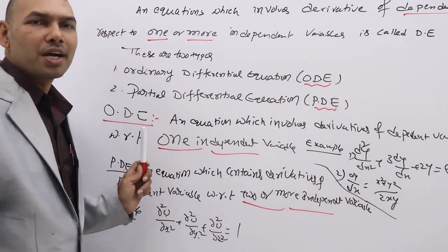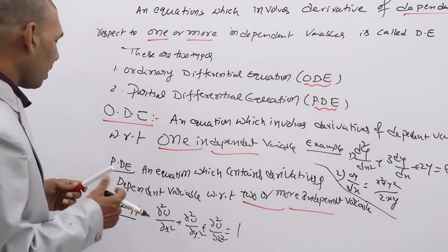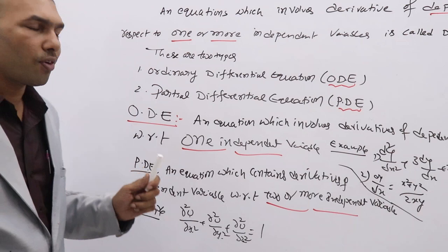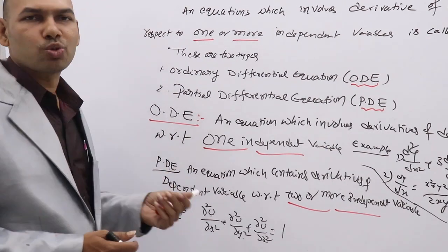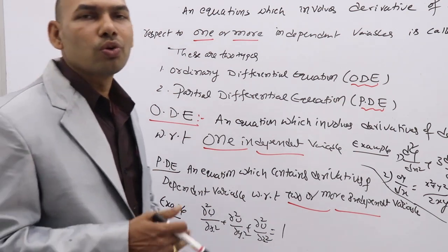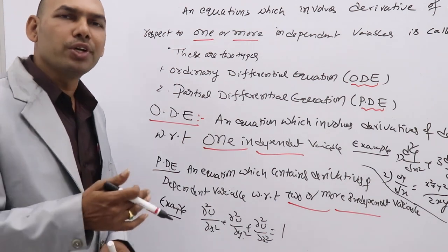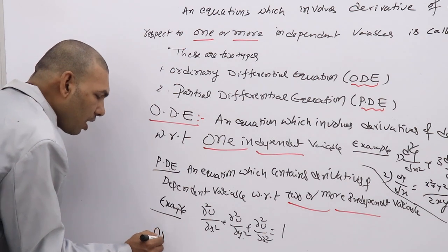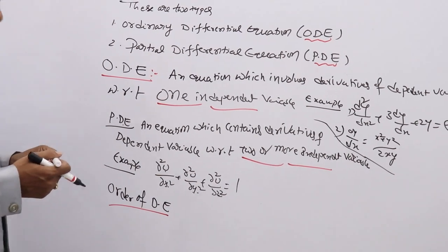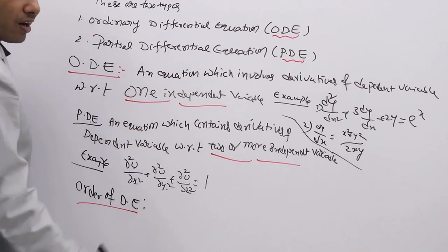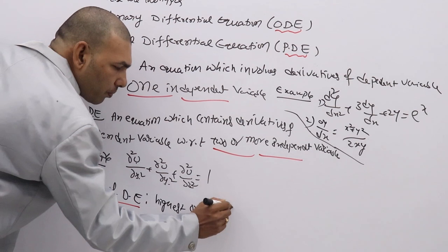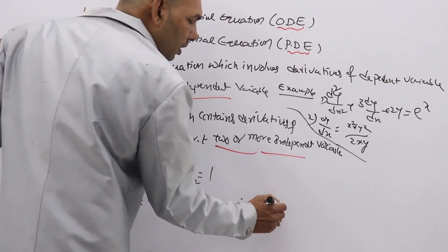Even though it is an ordinary DE or partial differential equation, the order and degree are defined the same way. So we will discuss the order of DE, because we are going to study ordinary differential equations of first order. The order of a DE is the highest order derivative involved in the DE.